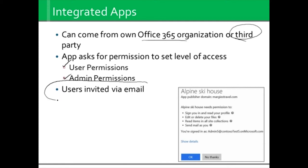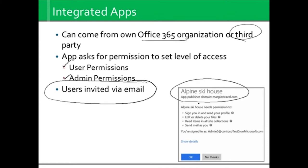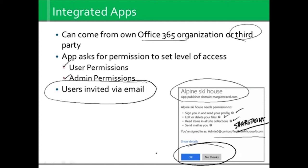Here's an example of a third-party app — this one is Margie's Travel, an Alpine ski house. When you bring it on, it needs your permission to sign you in, read your profile, edit and delete your files, read the items in your site collections which is SharePoint, and it sends mail as you. It tells you how you're signed in, and you have to say okay or no thanks. This is a very common example of what an app might ask you. When you install those apps, there's always going to be some permissions — we have to have set levels of access, determine what users can do, and who's going to be the administrator of that app.